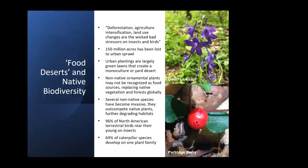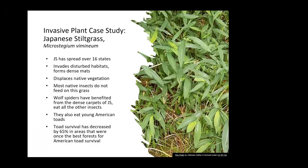Here's one case study with Japanese stiltgrass. Basically, if you get a really dense stand of stiltgrass, they have found that wolf spiders benefit the most in these dense carpets and they eat most of the other insects — and also young American toads. Where these dense stands exist, they have found that the toad survival rate has plummeted.